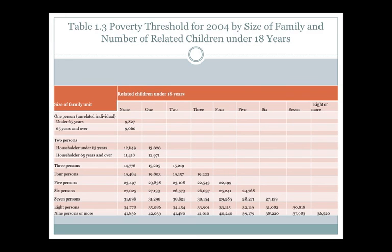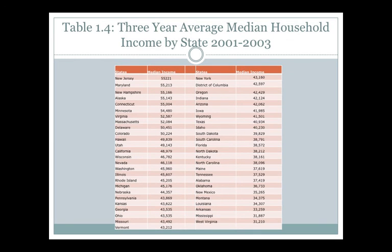Table 1.4 looks at state-by-state median household income — the average income across different states. You can see which states have the highest versus lowest incomes and compare those with the poverty threshold. In a state where wealth is quite high, the economic reality will be very different from states with a lower median income. If you're originally from another state, you can compare it with California to see how that works out.